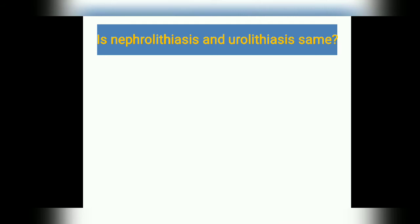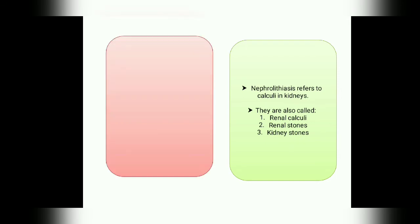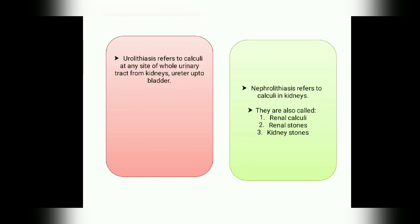Are nephrolithiasis and urolithiasis the same? The answer is no — they are different. Nephrolithiasis refers specifically to calculi in the kidneys, also called renal calculi or kidney stones. Urolithiasis refers to calculi at any site of the whole urinary tract — from the kidneys, to the ureter, to the bladder. 'Uro' means urinary tract and 'lithiasis' means stone.